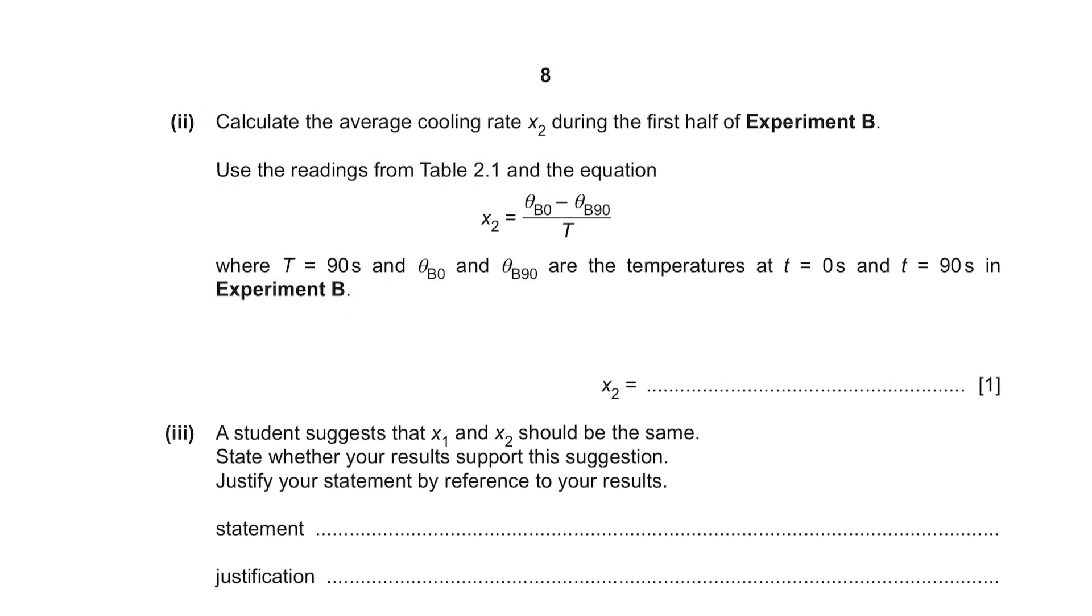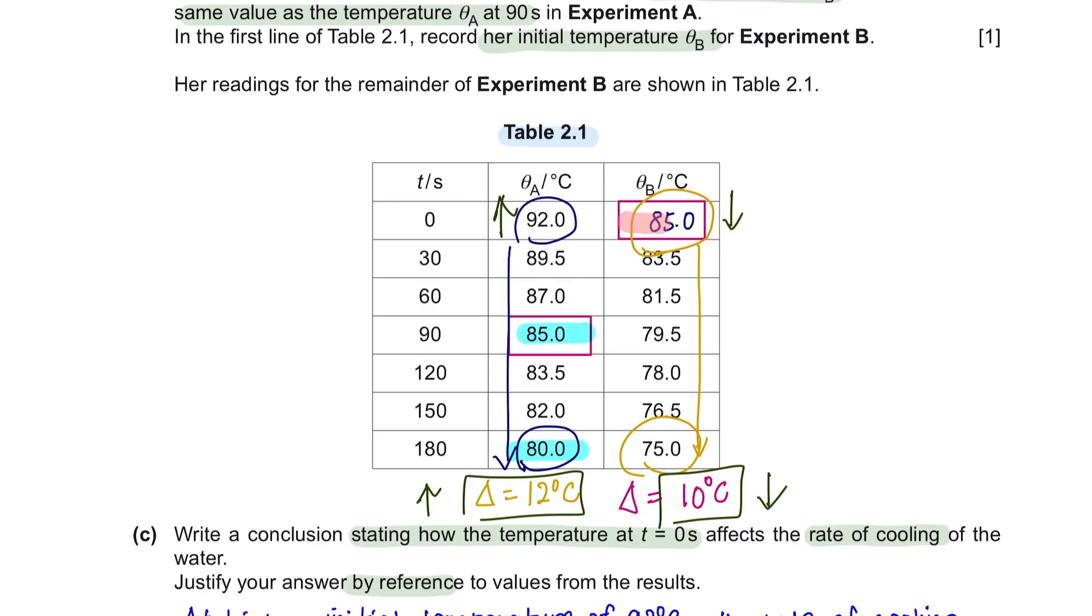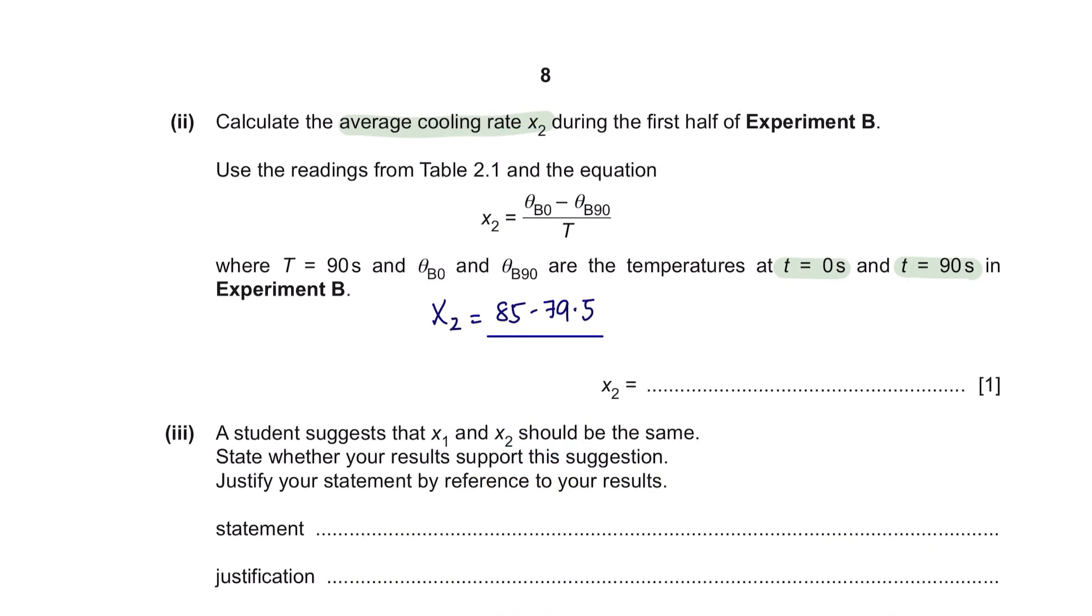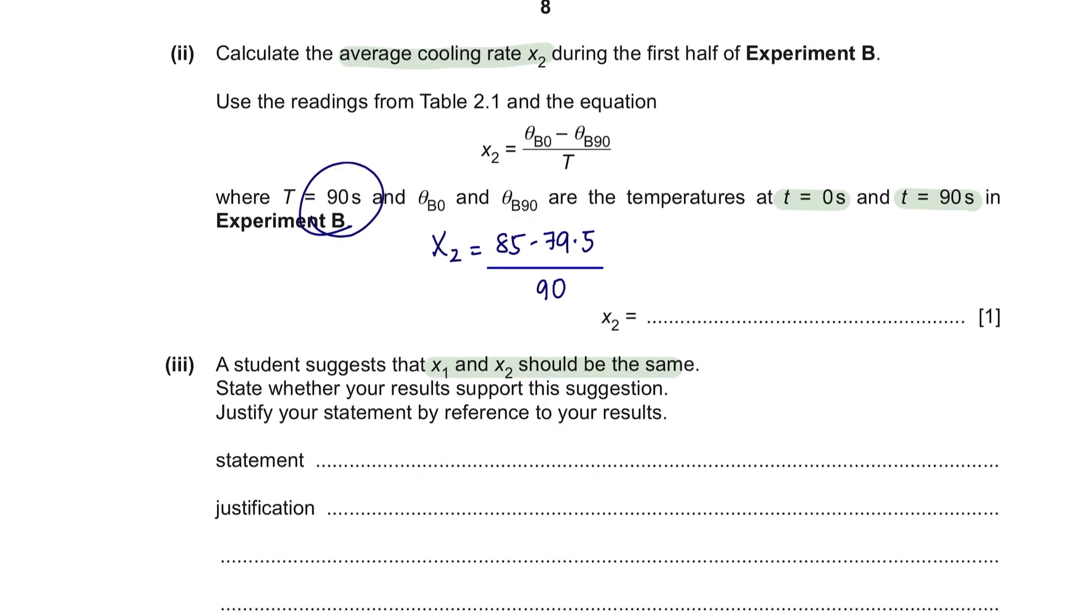Part 3. Calculate the average cooling rate X2 during the first half of the experiment. We're going to repeat the same thing, but this time using the readings of experiment B at time 0 seconds and at time 90 seconds. At 0 seconds, it was 85 degrees Celsius. At 90 seconds, it's 79.5. And the time here is 90 seconds, giving you, at two significant figures, 0.061 and your unit degrees Celsius per seconds.